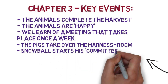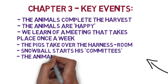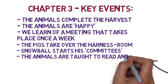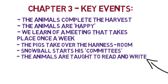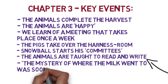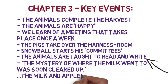Snowball starts his committees in this chapter. Remember they're not successful. As part of Snowball's committees the animals are taught to read and write, although they don't really achieve full literacy as the pigs do, and those that do pay no real interest in it. Squealer's speech towards the end of the chapter gives a brilliantly persuasive argument as to where the milk went, and thus we understand that the milk is for the pigs alone.